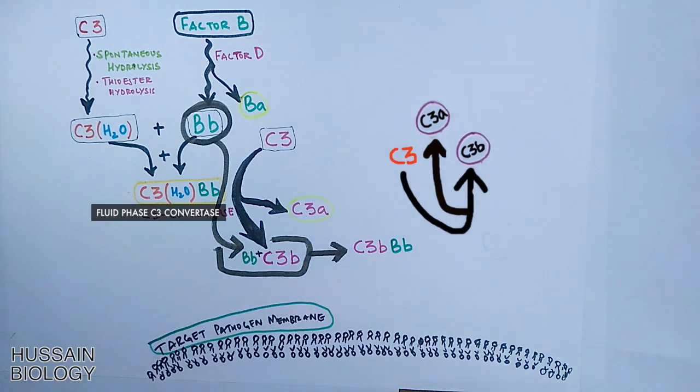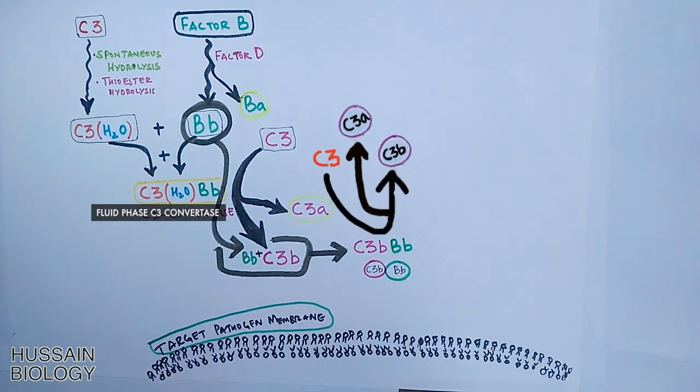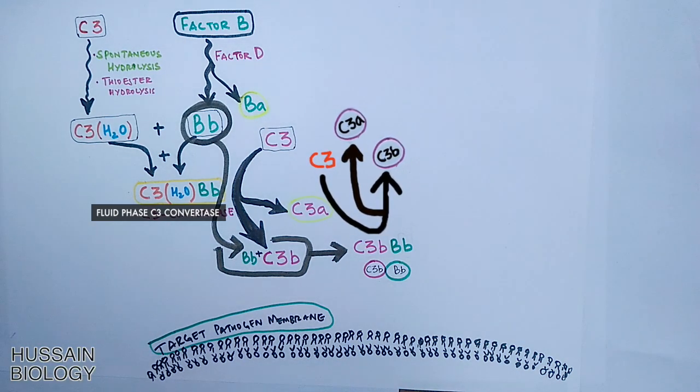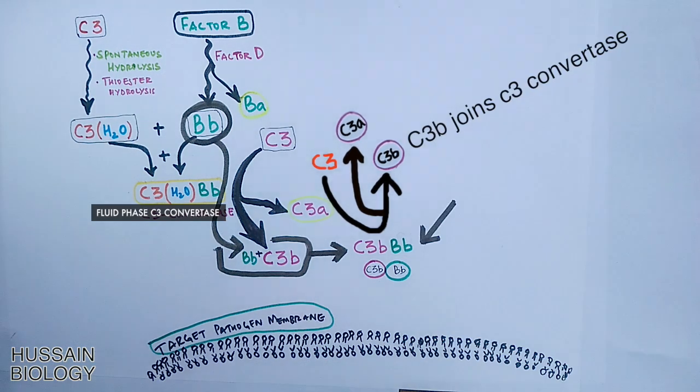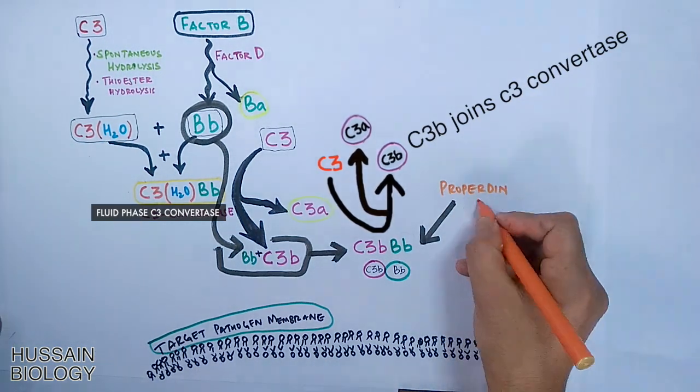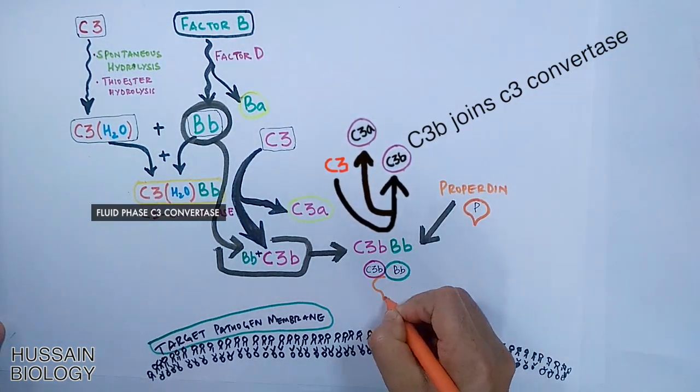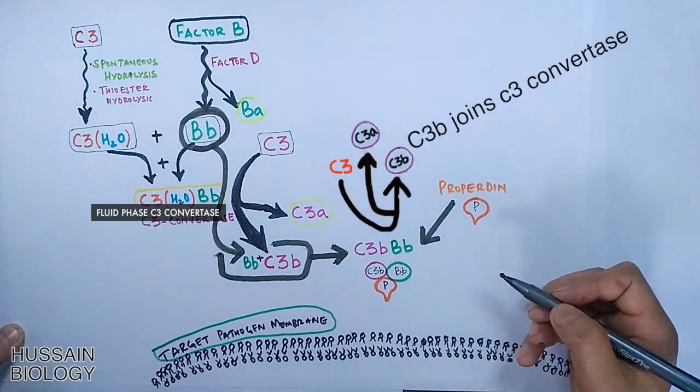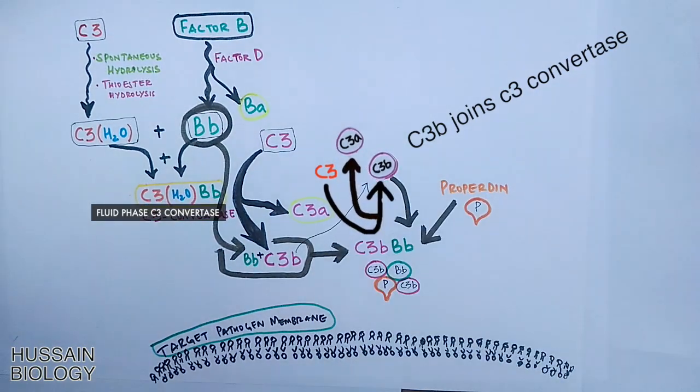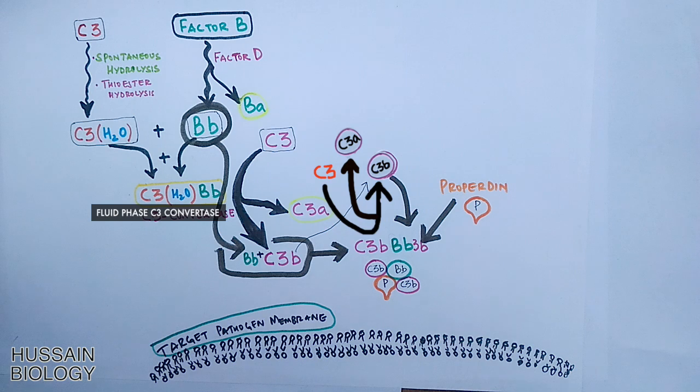Now this C3 convertase acts upon C3 and we get C3a and C3b. Furthermore, we see along with Propertin molecule, this C3b joins with C3 convertase thus making the complex as C3bBb3b which acts as a C5 convertase of alternative pathway. Basically it's analogous to C5 convertase of classical pathway.